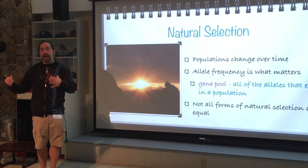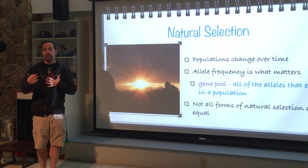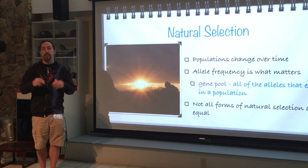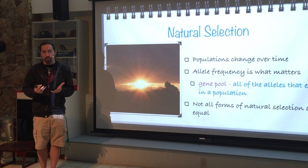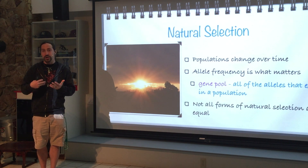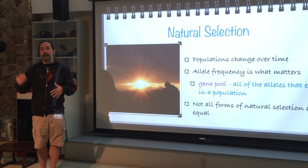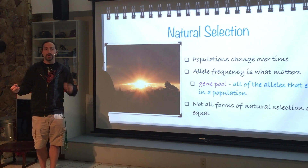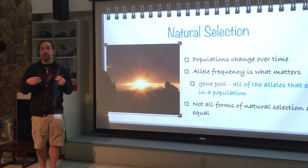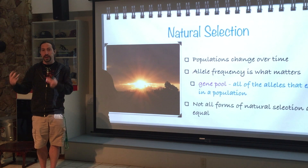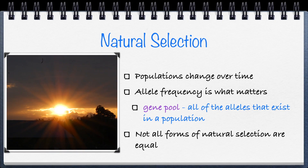A gene pool consists of a group of organisms that are interbreeding, and all the different alleles that exist in that population make up the gene pool. If an allele vanishes or gains in percentage, that means we have a change in the gene pool. If organisms move from one area to another, that can also change allele amounts. Any change in the gene pool means natural selection has occurred.